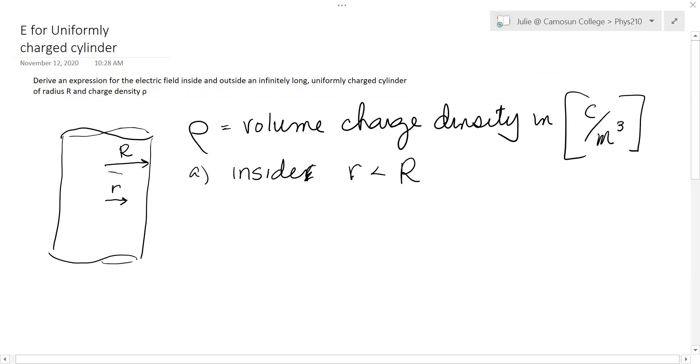We draw our Gaussian surface through that point. Our Gaussian surface will be a cylinder, the length of which we'll call L. It doesn't matter how long it is, it's just arbitrary length.